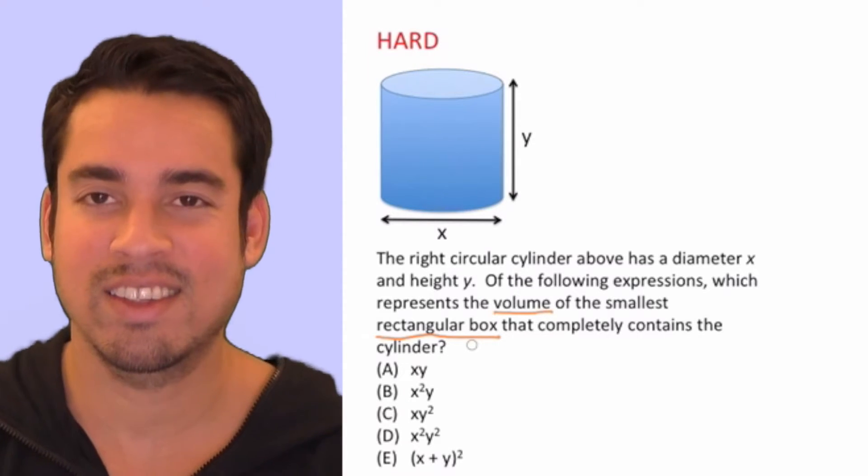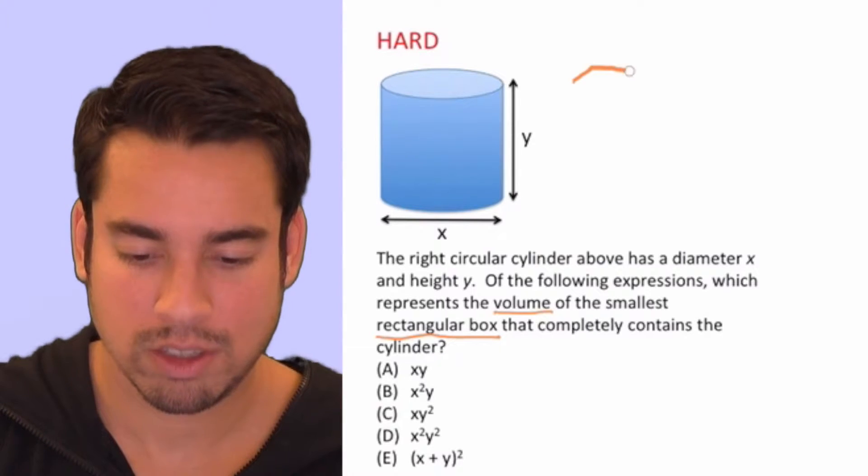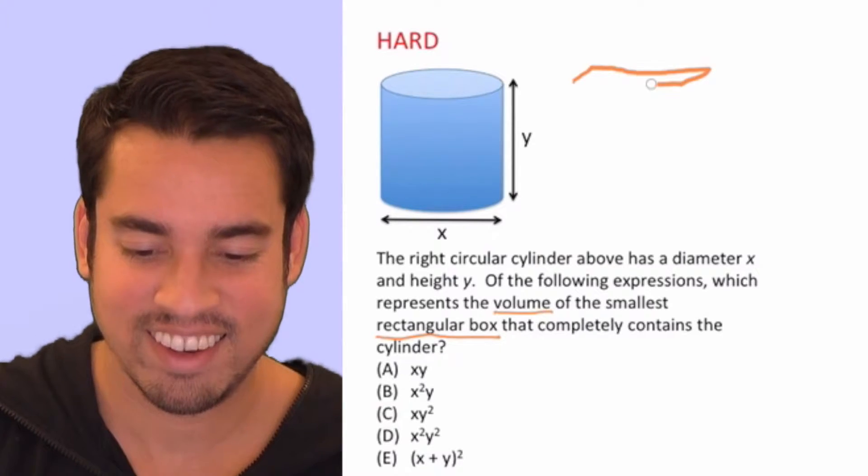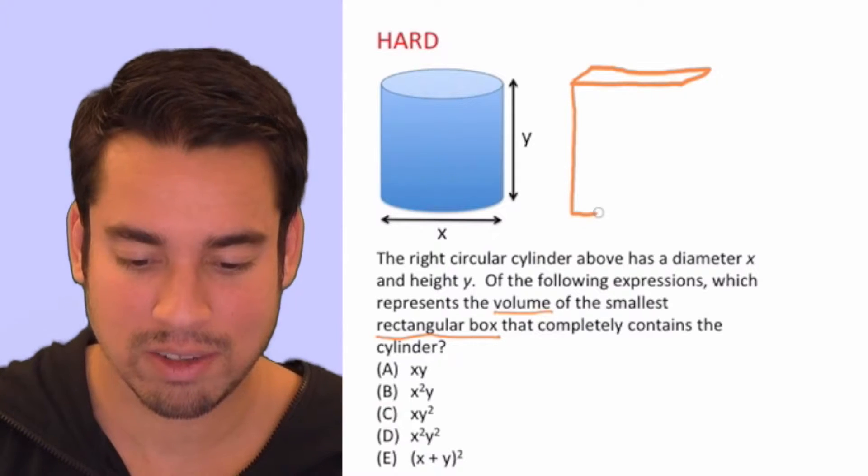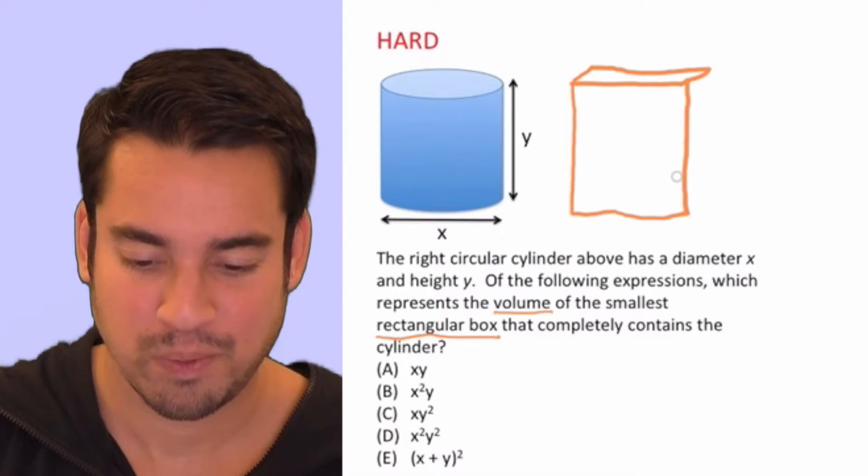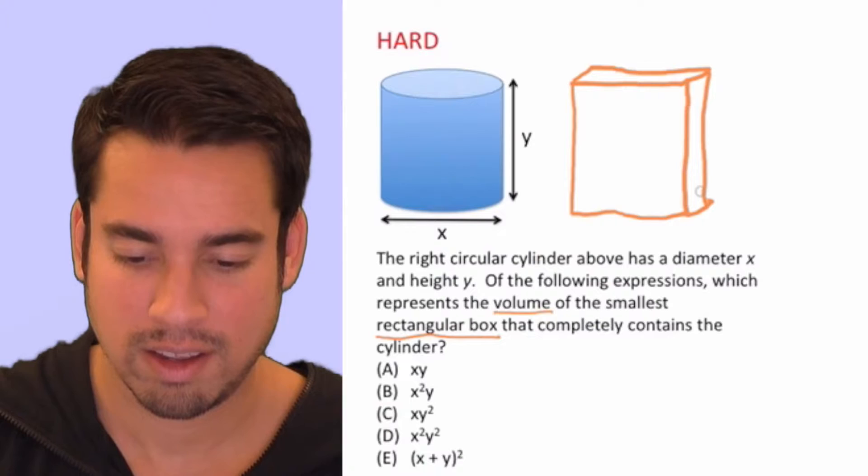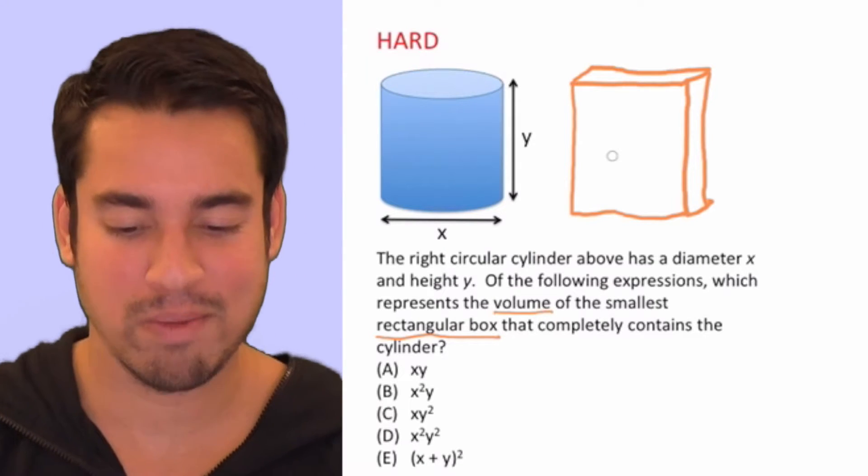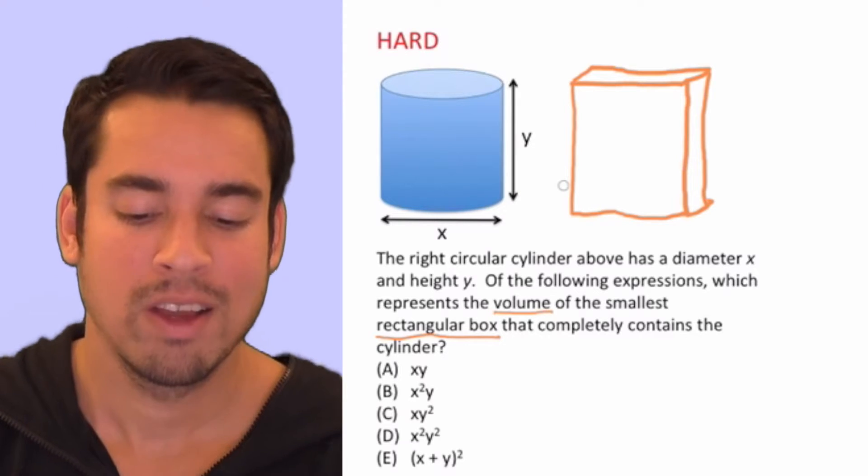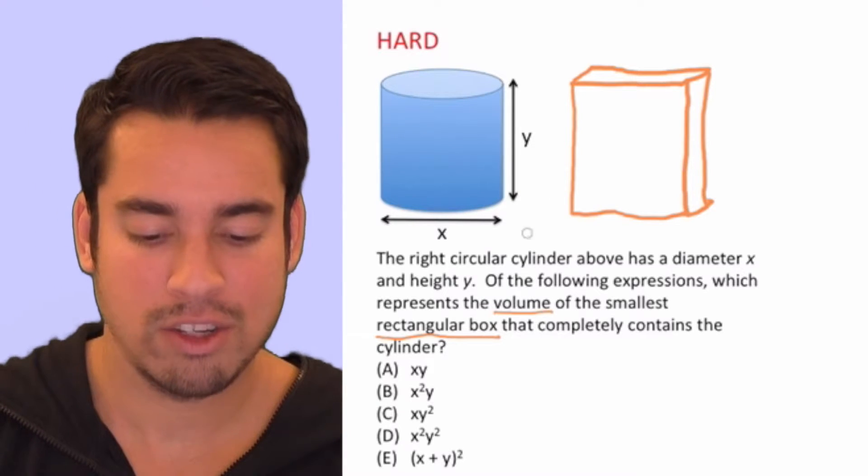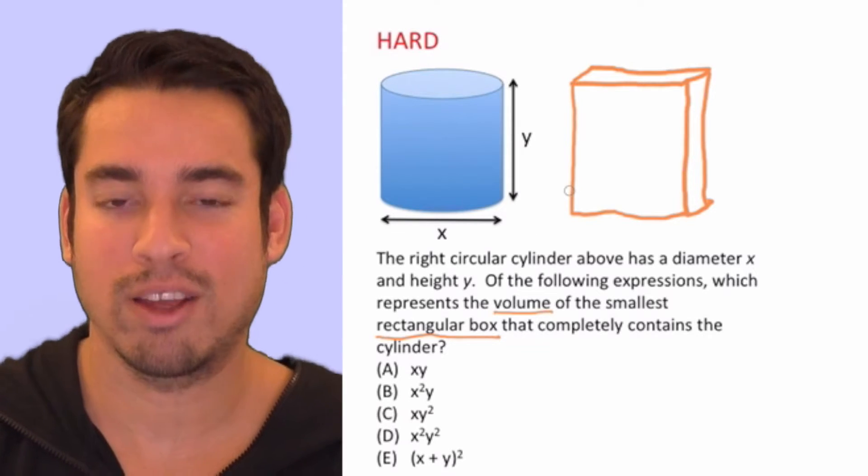Volume of the smallest rectangular box that completely contains the cylinder. Okay, so this is kind of interesting. We want to fit this in some sort of a box. I'm just going to do a crude drawing here. We want to fit this in some sort of a rectangular box. So it's going to look something like this. I'm going to put this guy in there and it's just the very smallest. So we've got to think about how to do that with the values that they've provided.